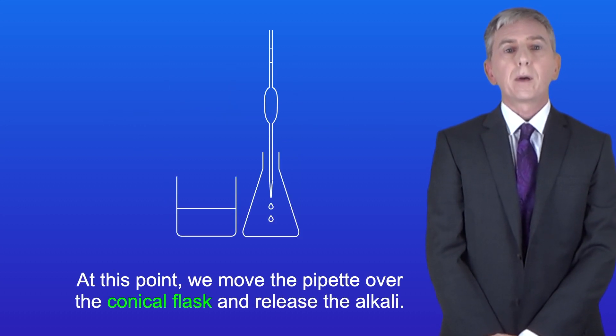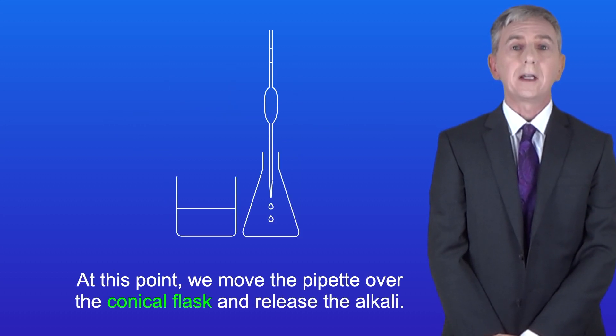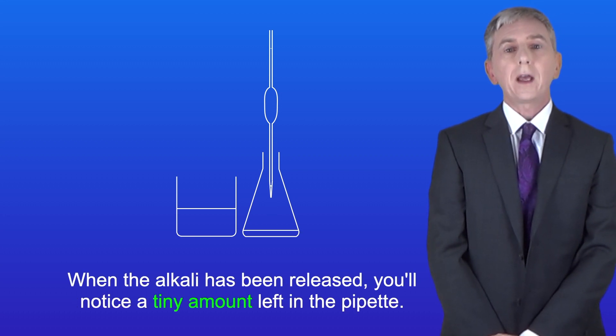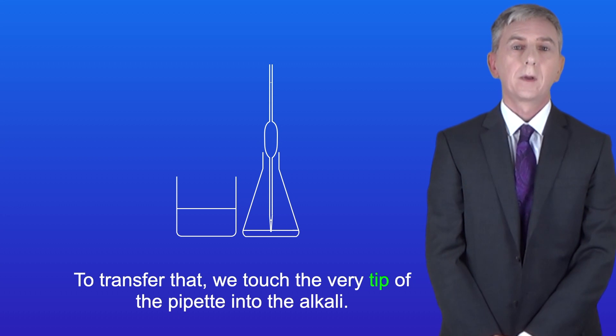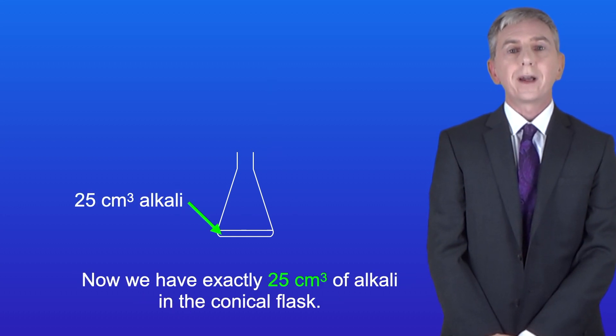Now at this point we move the pipette over the conical flask and release the alkali. When the alkali has been released you'll notice a tiny amount left in the pipette. To transfer that we touch the very tip of the pipette into the alkali. Now we have exactly 25 cm³ of alkali in the conical flask.